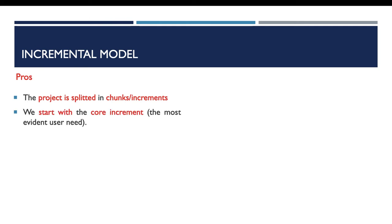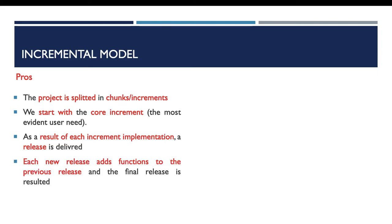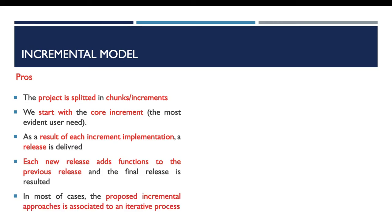Now for the incremental model: the project is split into chunks or increments. We start always with the highest priority increment, and as a result of each increment implementation a release is delivered. Each release adds functions to the previous release and composes the final result. In most cases this model is used together with the iterative model — the whole project is split into increments, and to implement each increment we use one iteration.